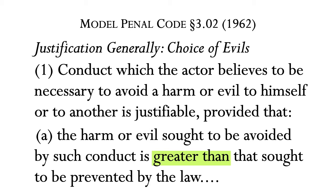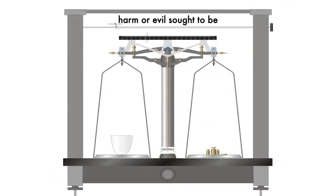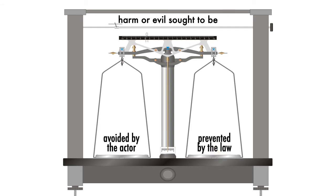So it was argued by Professor Herbert Wechsler of Columbia Law School, who was the chief architect of the Model Penal Code. The defense calls for a balancing of two factors: the harm or evil sought to be avoided by the actor against the harm or evil sought to be prevented by the law. In short, if the actor broke the law to avoid a worse result, then she should have a defense.